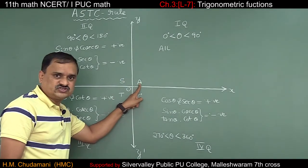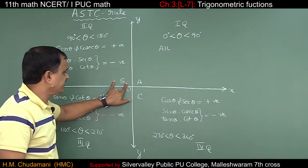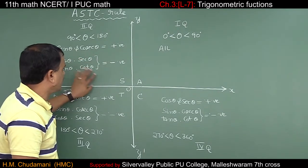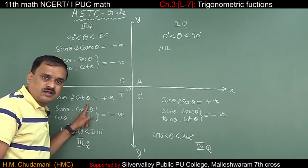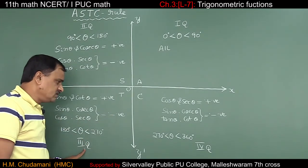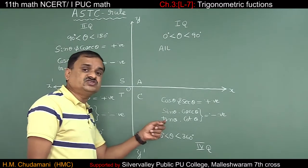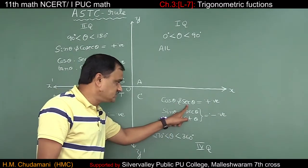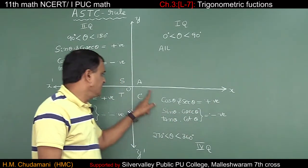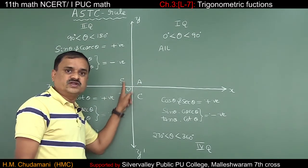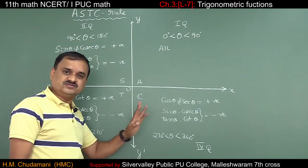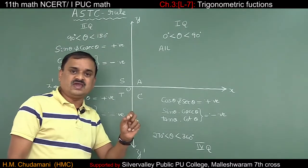To summarize the ASTC rule: All trigonometric functions are positive in Q1. S: sin θ and cosecant θ are positive in Q2. T: tan θ and cot θ are positive in Q3. C: cos θ and secant θ are positive in Q4. A mnemonic: 'All Students Take Coffee' or 'All Silver Teacups' — just remember ASTC.